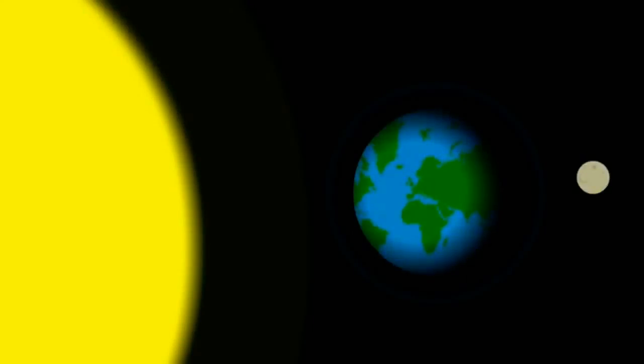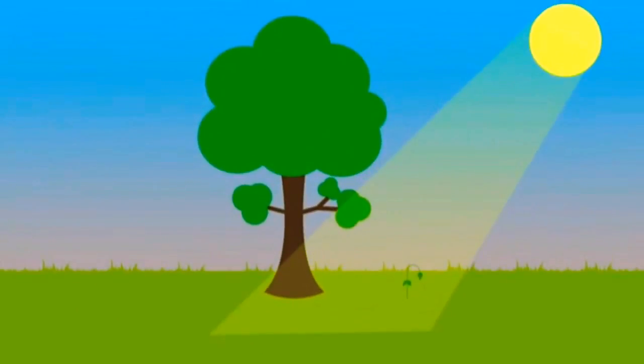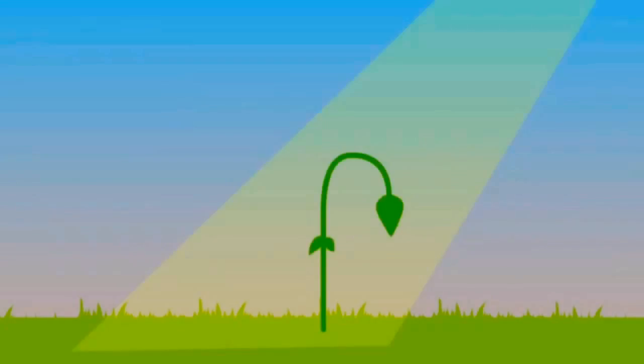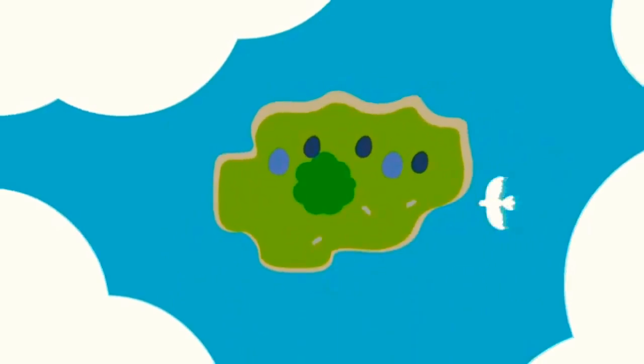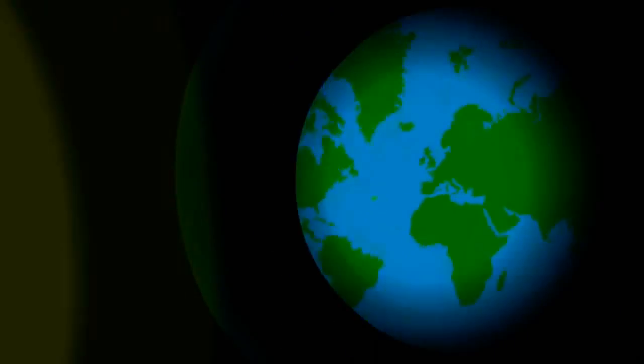From this video, you learn that plants play the most important role in our daily life — for the earth, for animals, and for us. Not just by producing food, but by keeping animals alive and helping to release oxygen to keep us alive.